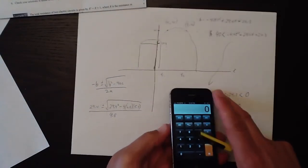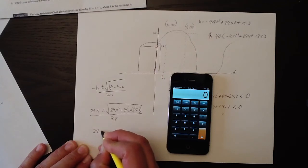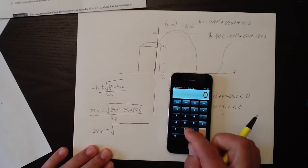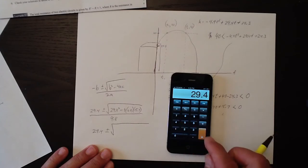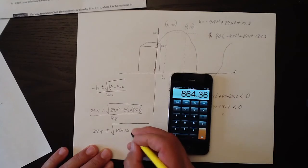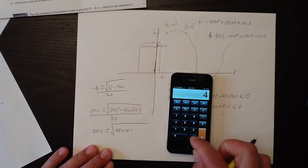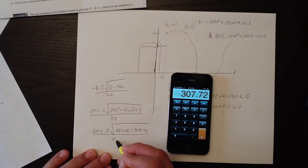So our calculator comes out and we start simplifying this a little bit. So 29.4 plus or minus square root of 29.4 times 29.4, 864.36 minus 4 times 4.9 times 15.7 times 15.7 times 307.72 all over 9.8.